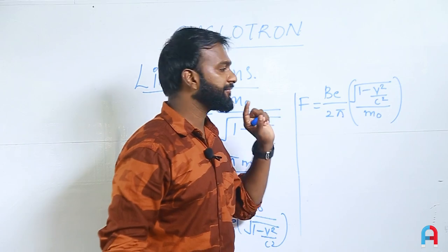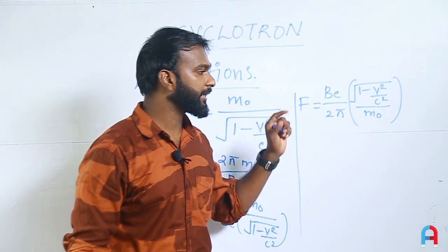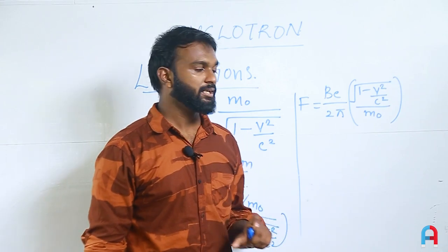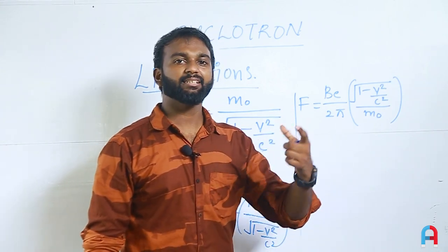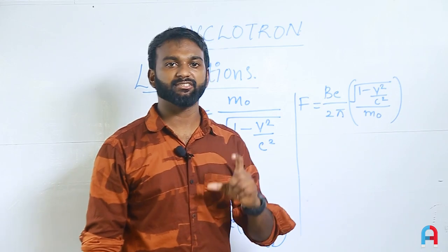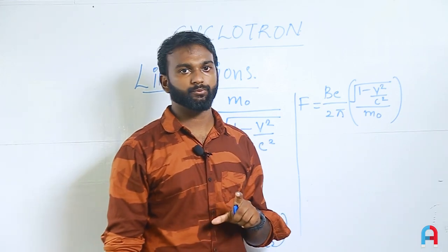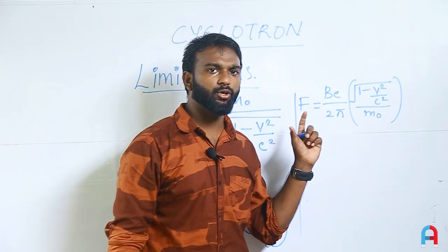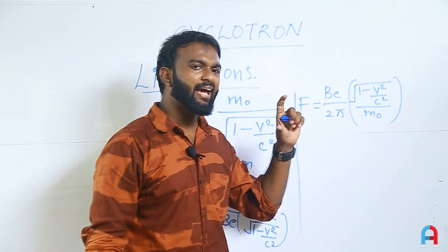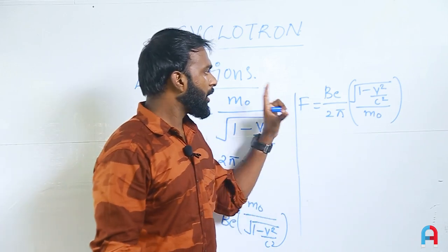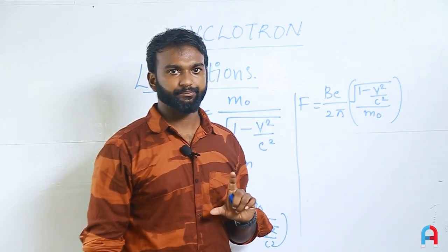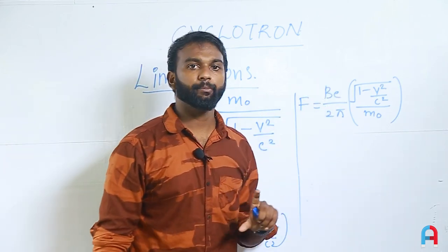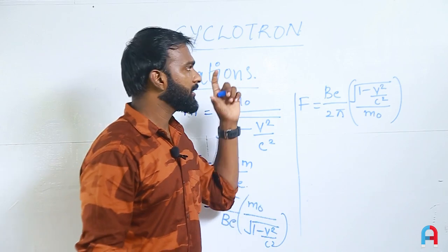Because the mass increases relativistically, the time period T = 2πm/(BQ) also changes. The angular frequency changes, and at a certain stage the particle goes out of synchrony with the AC oscillator frequency. The particle stops gaining further acceleration — this is a fundamental limitation of the cyclotron.